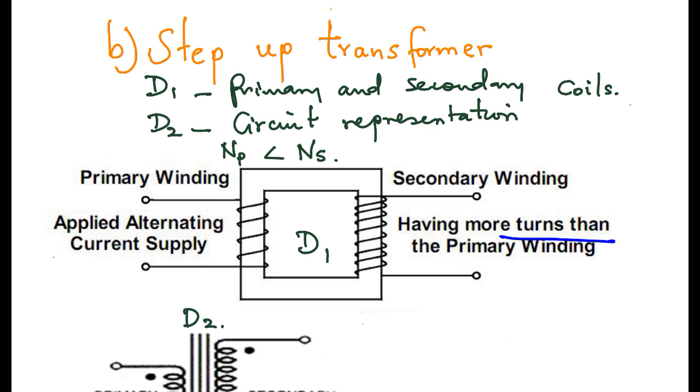Therefore, the turns ratio is greater than 1. That is, the ratio of NS to NP, what we call the turns ratio, is greater than 1 for a step-up transformer.